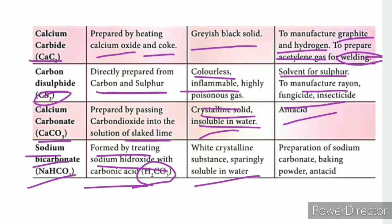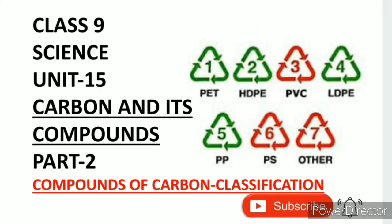In summary, the compounds of carbon are classified into two groups: organic compounds and inorganic compounds. Organic compounds come from living things and include carbon with oxygen, sulfur, and nitrogen, forming groups such as hydrocarbons, alcohols, aldehydes, ketones, carboxylic acids, and amino acids. Inorganic compounds come from non-living things and include calcium carbonate, carbon monoxide, and carbon dioxide. Thank you.